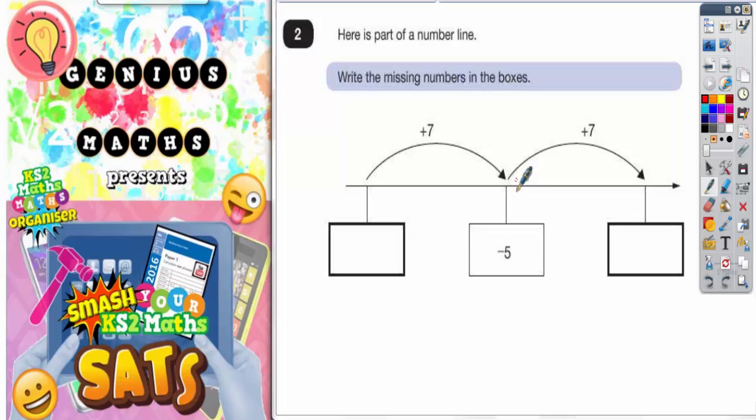Well, we're on negative 5 and we've got to go forwards plus 7. So the question is, what's negative 5 plus 7?